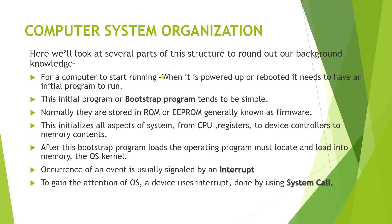Firstly, we will talk about how a system is booted. When it is powered up or rebooted, it needs an initial program to run. This initial program is called the bootstrap program. It tends to be simple and is stored in ROM because at that time only ROM is present or visible on the computer system. ROM or EEPROM is used, which is known as firmware. This initializes all aspects of the system, from CPU registers to device controllers to memory contents. So all resources are initialized at this point during booting.